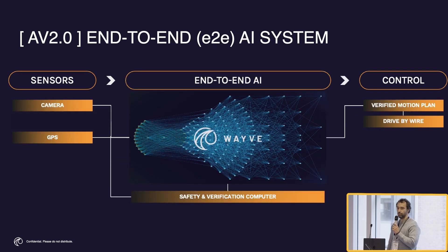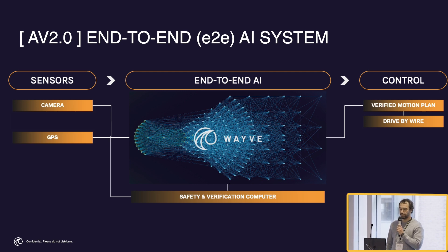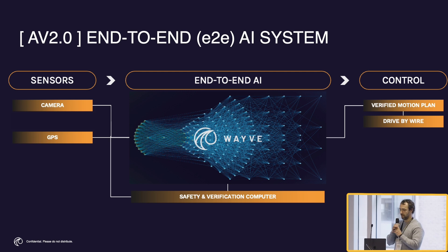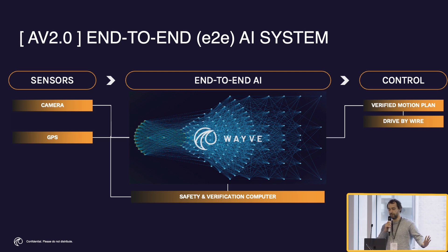What we do at WAVE is try to learn the whole autonomous stack end-to-end. We're just taking inputs from vision, from cameras, and producing motion control plans that could be sent to a controller. All of that doesn't have any separate components at all — the whole thing is just a big neural network.